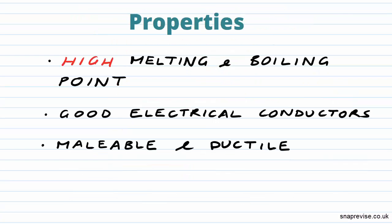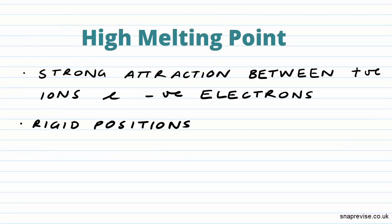The general properties of metals are that they have a high melting and boiling point, they're good electrical conductors, and they're both malleable and ductile. Let's have a look at each of those properties individually, starting with the high melting point.